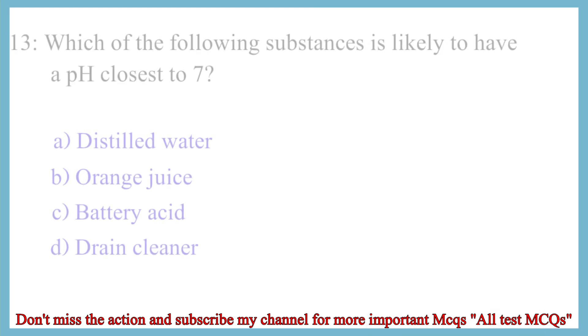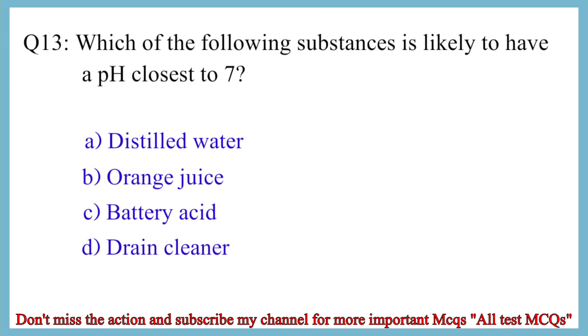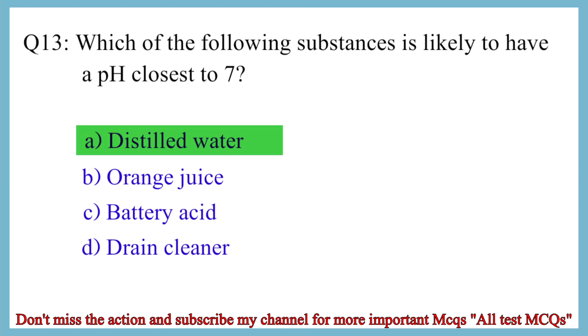Question No. 13. Which of the following substances is likely to have a pH closest to 7? The correct answer is option A: Distilled water.